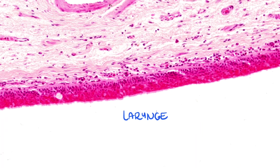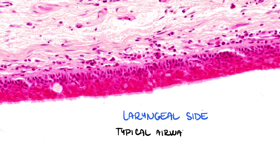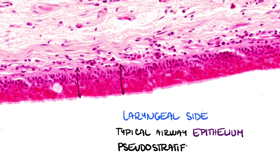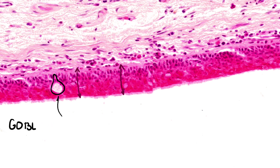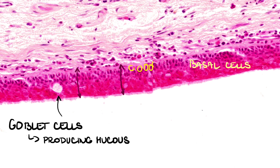The laryngeal side is covered with typical airway epithelium — pseudostratified columnar epithelium with ciliary and goblet cells. We can appreciate the ciliary border, which provides a barrier between the external environment and the internal structures, and helps move substances along the surface through coordinated movements of cilia. These cells are goblet cells, producing mucus, and basal cells, which differentiate into ciliary cells and goblet cells, are at the base.